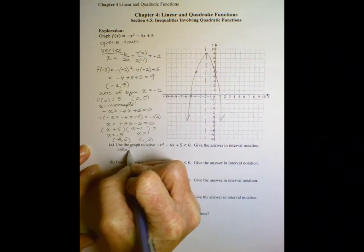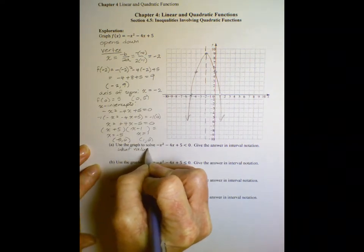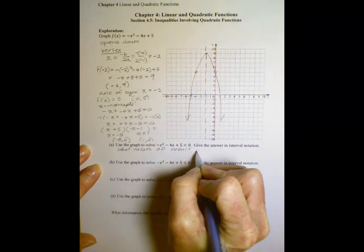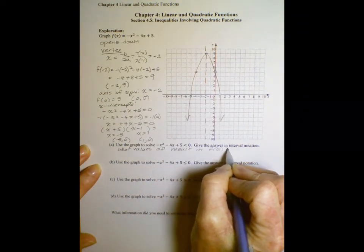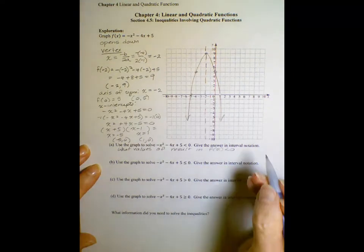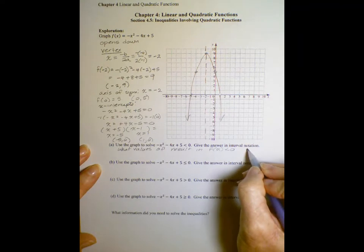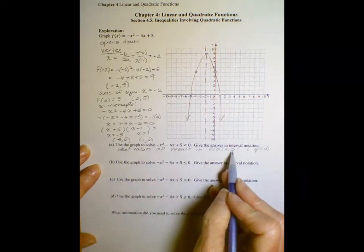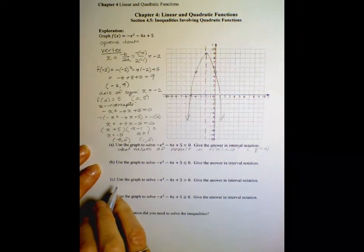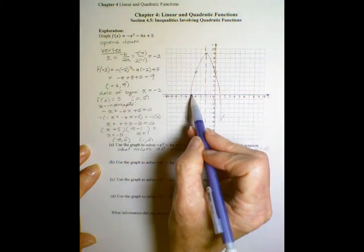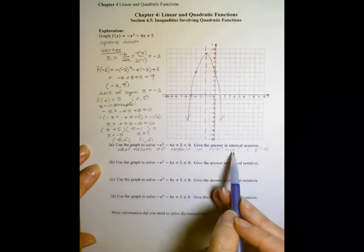What values of x result in f of x less than 0, which means the same thing as saying y is less than 0. I'll just maybe make a note over here in parentheses, y less than 0. So that's what they're asking us. What x's give us y's that are less than 0? So we're going to use the graph. We're going to look at it physically to see visually where are the y's less than 0.